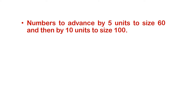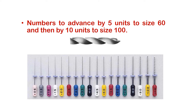What this means is: starting from a number 10 K-file, moving to 15, 20, 25, 30, 35 — the numbers are advancing by 5 units until number 60. After 60, the numbers advance by 10 units: 60, 70, 80, 90, 100. So starting from number 10, it advances by 5 units to number 60, and after that by 10 units.